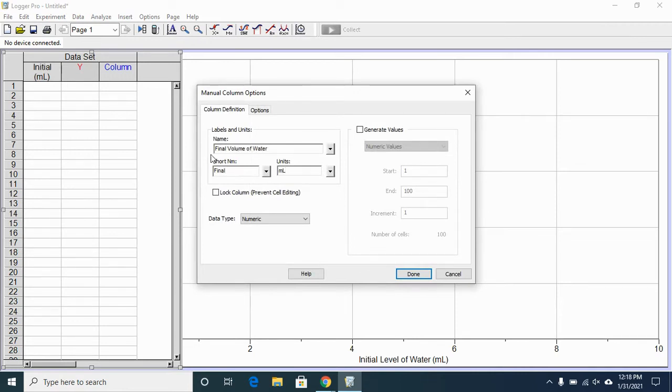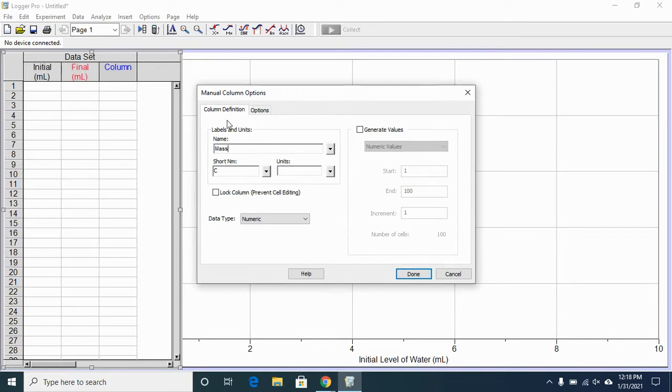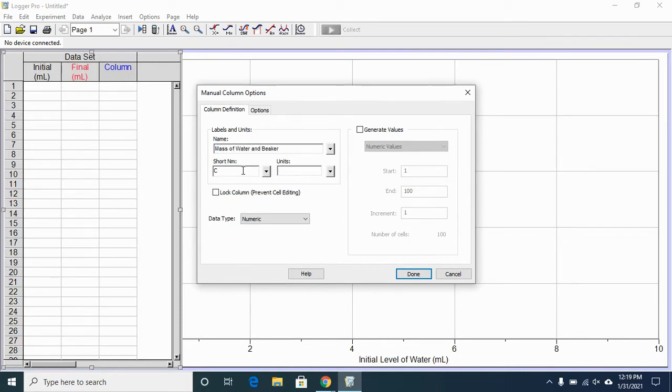I'm going to make this column the initial level of water. You can see here, I've changed the second column to be the final volume of water for each trial. Now, short name, final, and the units, milliliters, lowercase m, capital L. For the column that I had created earlier, that's the mass of the water and the beaker together, making sure that the short name indicates that it's the water and beaker together and the units are grams.